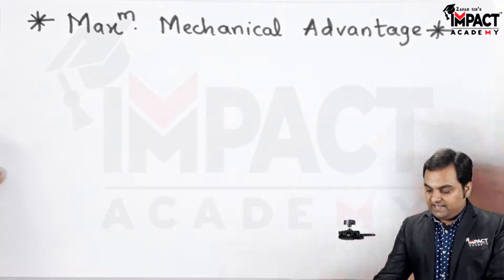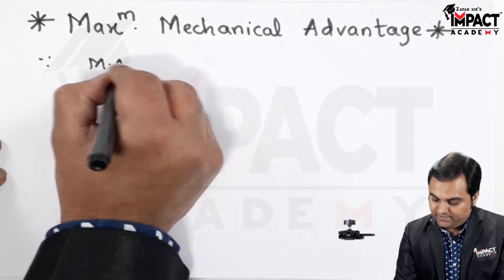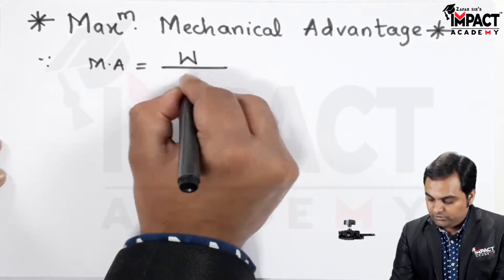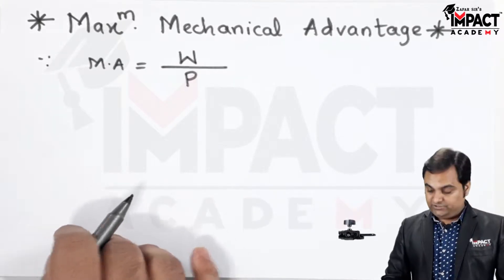Now, since mechanical advantage is given by, it is denoted by MA, load upon effort. That ratio is called as mechanical advantage.